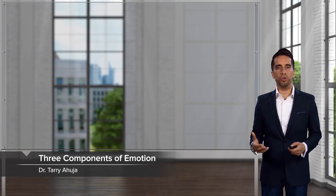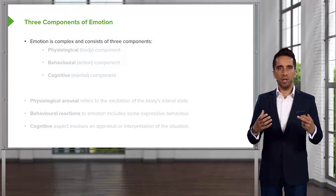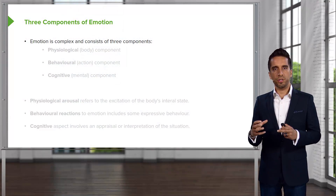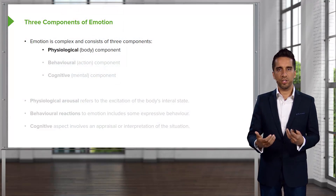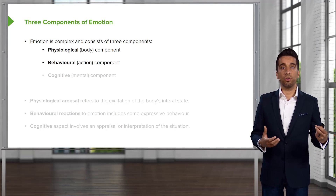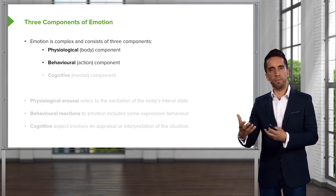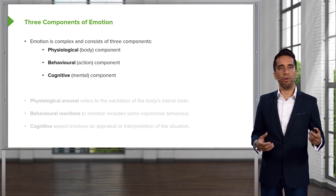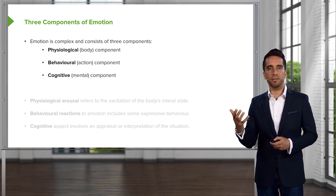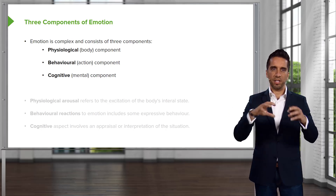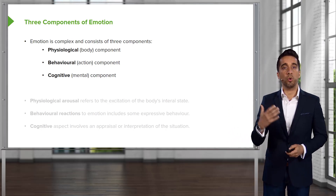Let's get into how it is that we respond to the world around us. So typically what we're talking about is emotion. We're going to walk through the three main components of what makes up emotion. Emotion is made up of three main components: the first being the physiological component, or how does your body react to a stressor; the second is a behavioral component, or our action in response to that stressor; and third is the cognitive component, or mentally how is it that we react to that stressor. Collectively, these three together will create the emotion that we impart.